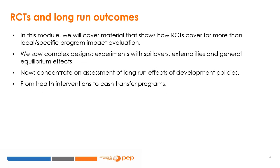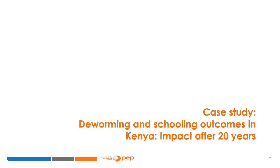In this module, we will cover material showing how randomized control trials cover far more than local and specific program impact evaluations. We have already covered complex designs and experiments that capture spillovers and externalities. We will now concentrate on the assessment of long-run effects of development policies, from health interventions to cash transfer programs. The first case study is that of deworming and schooling outcomes in Kenya, concentrating on their impact after 20 years.